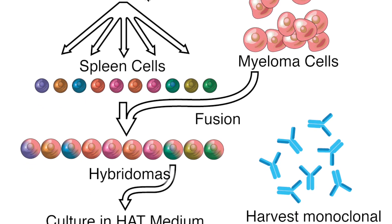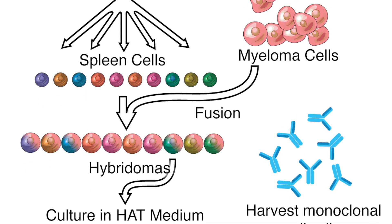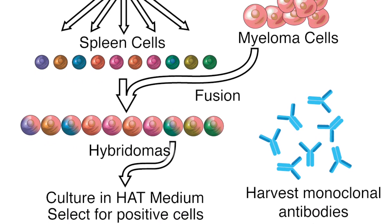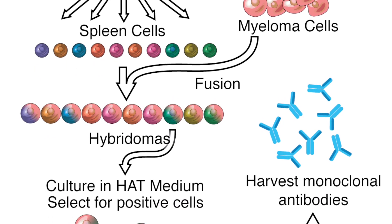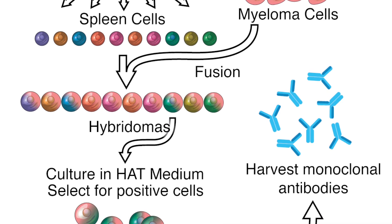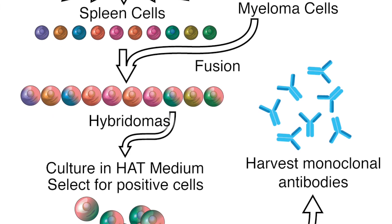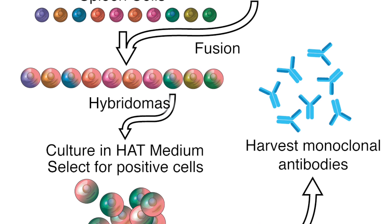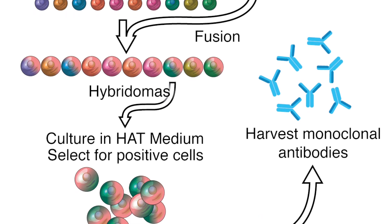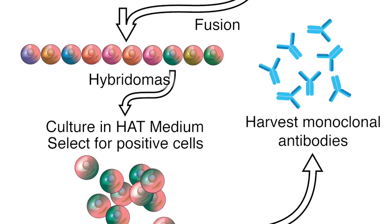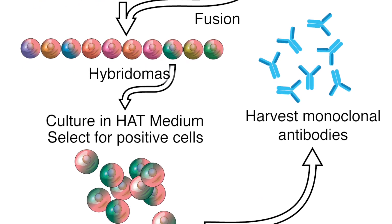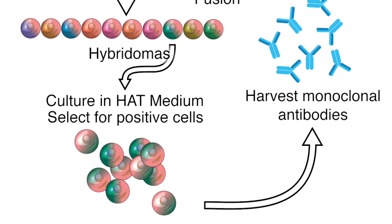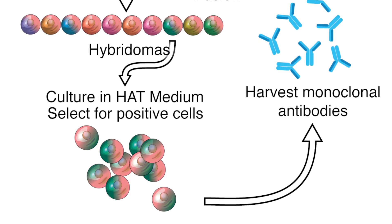Since all mammals make lymphocytes, including mice, these mouse lymphocytes can be combined with a type of tumor cell to make a hybridoma. Single hybridoma cells divide to make a larger number of identical cells that all produce antibodies. These antibodies are then collected and purified, and these are called monoclonal antibodies.